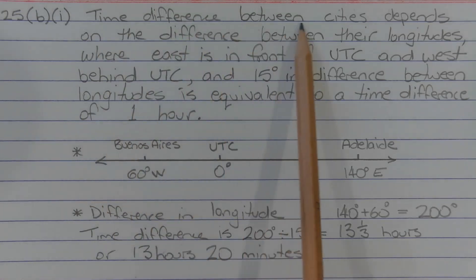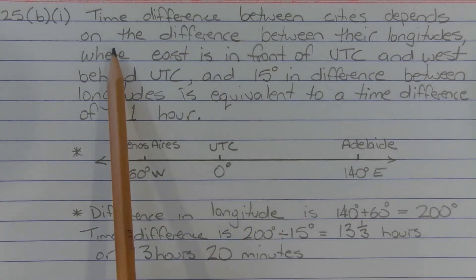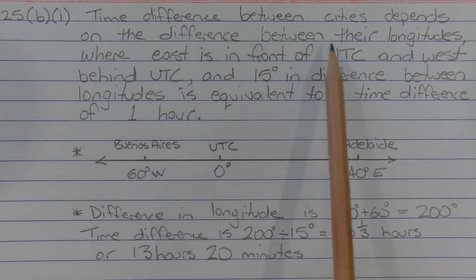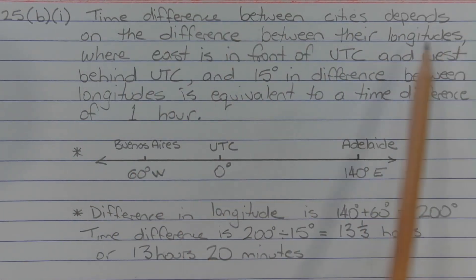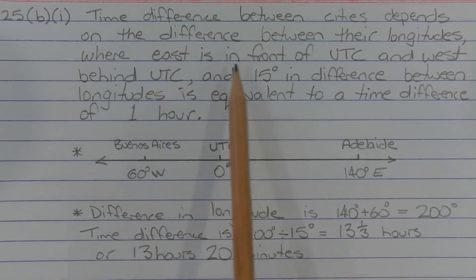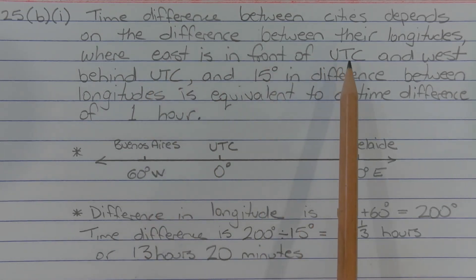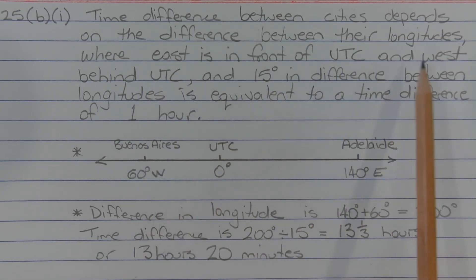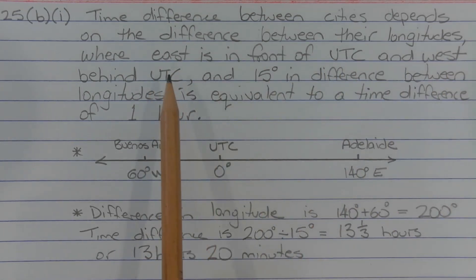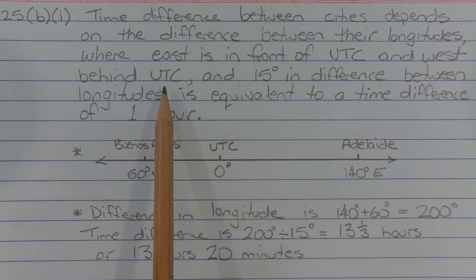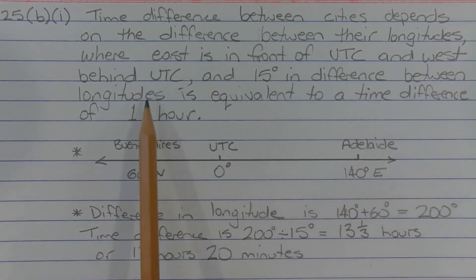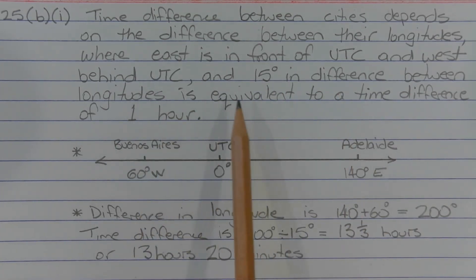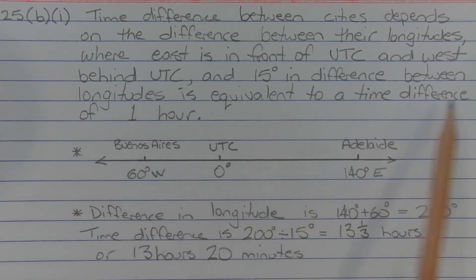The time difference between cities depends on the difference between their longitudes, not their latitudes, where east is in front of universal coordinated time and west is behind universal coordinated time, and 15 degrees difference between the longitudes is equivalent to a time difference of one hour.